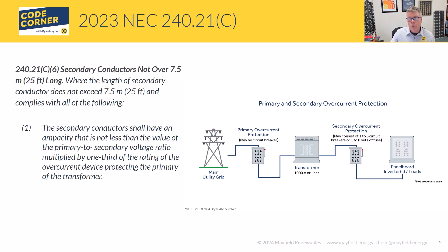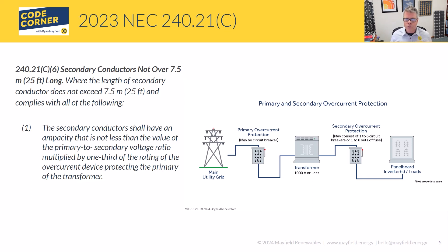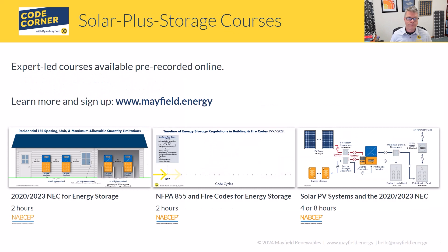Sub-part two of C6 talks about secondary conductors terminating on a single circuit breaker or set of fuses, and also that those secondary conductors are protected from physical damage. That rounds out those rules. Parts C1 through C5 are specific to different applications, so if you meet those requirements, look at and apply those rules for your transformers.